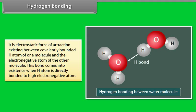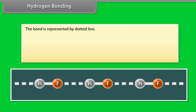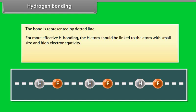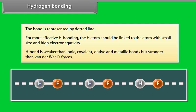Hydrogen bonding is an electrostatic force of attraction existing between the covalently bonded hydrogen atom of one molecule and the electronegative atom of another molecule. This bond comes into existence when a hydrogen atom is directly bonded to a highly electronegative atom, and is represented by a dotted line. For more effective hydrogen bonding, the hydrogen atom should be linked to an atom with small size and high electronegativity. Hydrogen bond is weaker than ionic, covalent, dative, and metallic bonds but stronger than van der Waals forces.